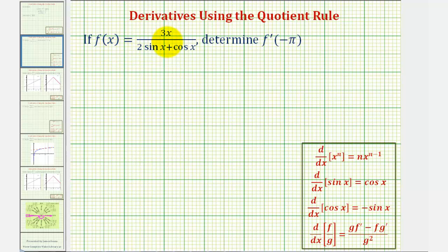Because our function f of x is a quotient of two functions, to find the derivative function we'll have to apply the quotient rule, which is given here below. Where a function f is in the numerator and function g is in the denominator, the derivative of this quotient with respect to x is equal to g times f prime minus f times g prime, divided by g squared.